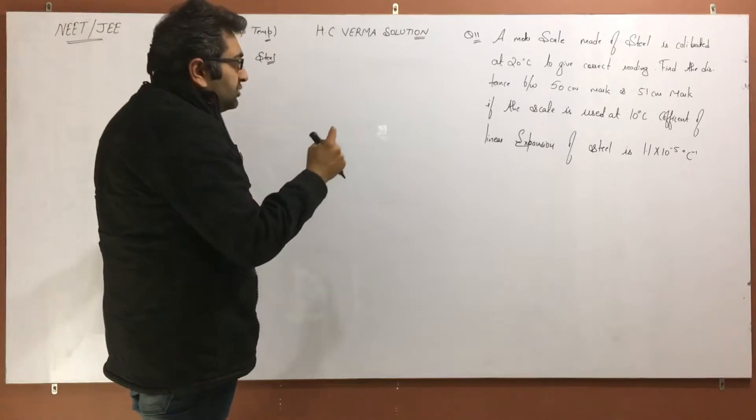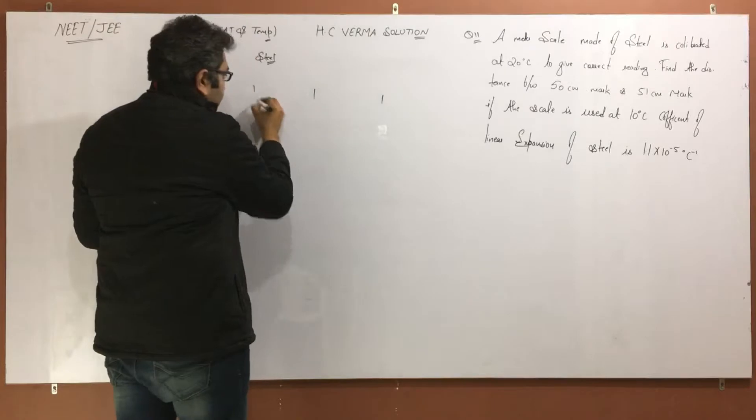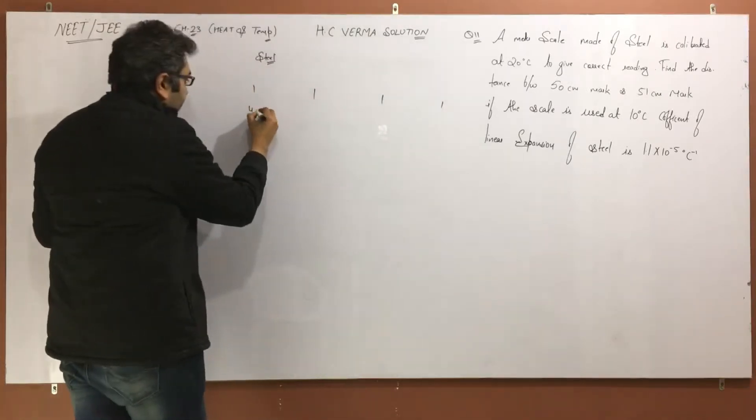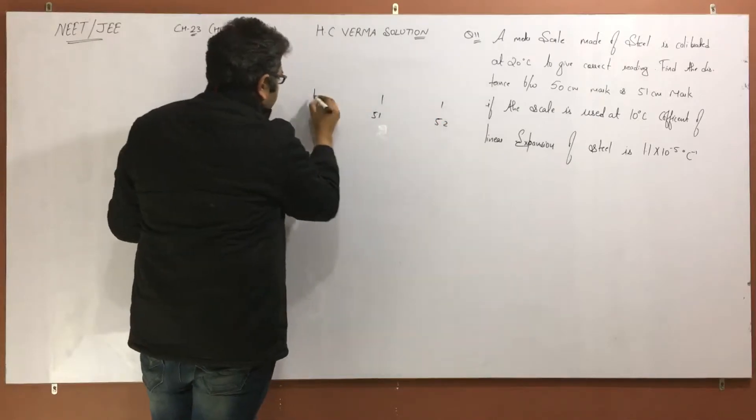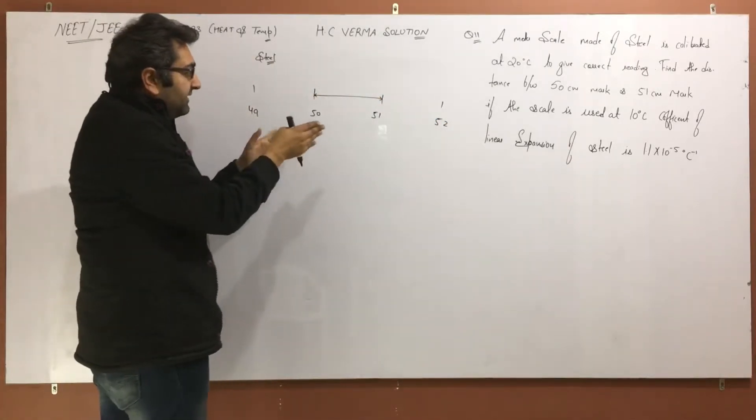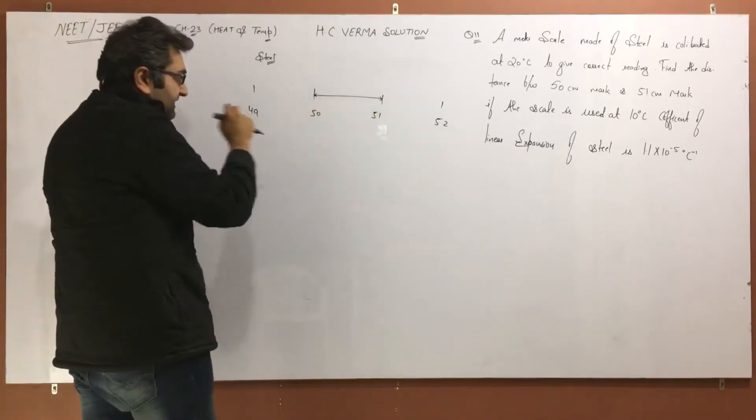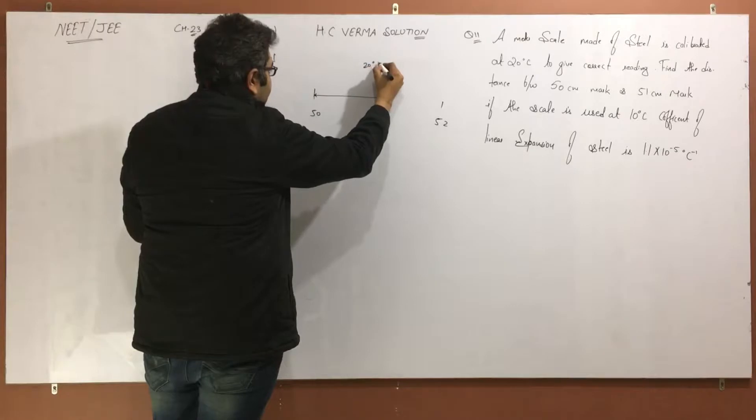Calibration means suppose that we have a scale, like this is 49, this is 50, this is 51, this is 52. It means that it is 1 centimeter. Suppose that it is small. For example, when calibration is how many degrees? 20 degrees Celsius.